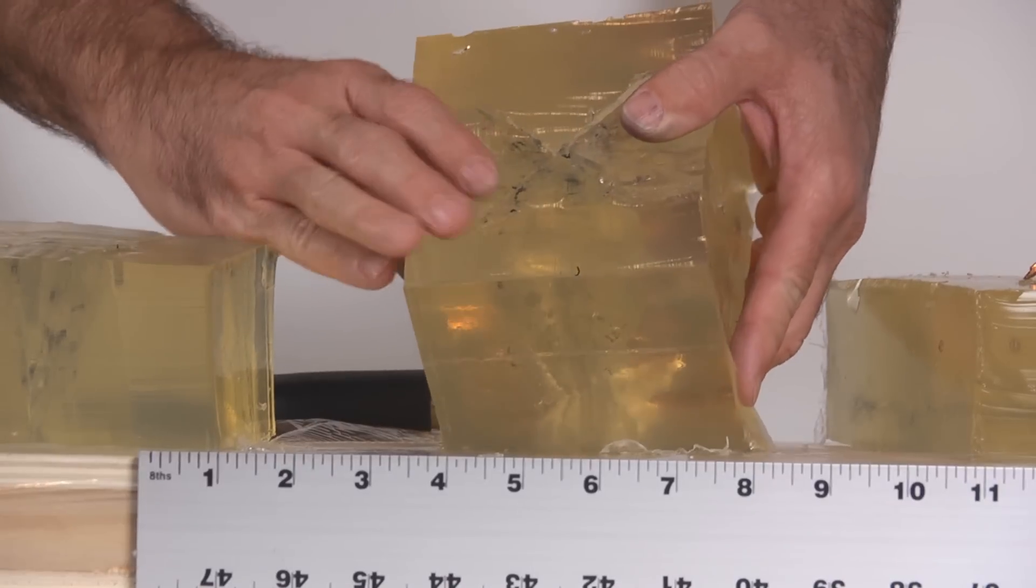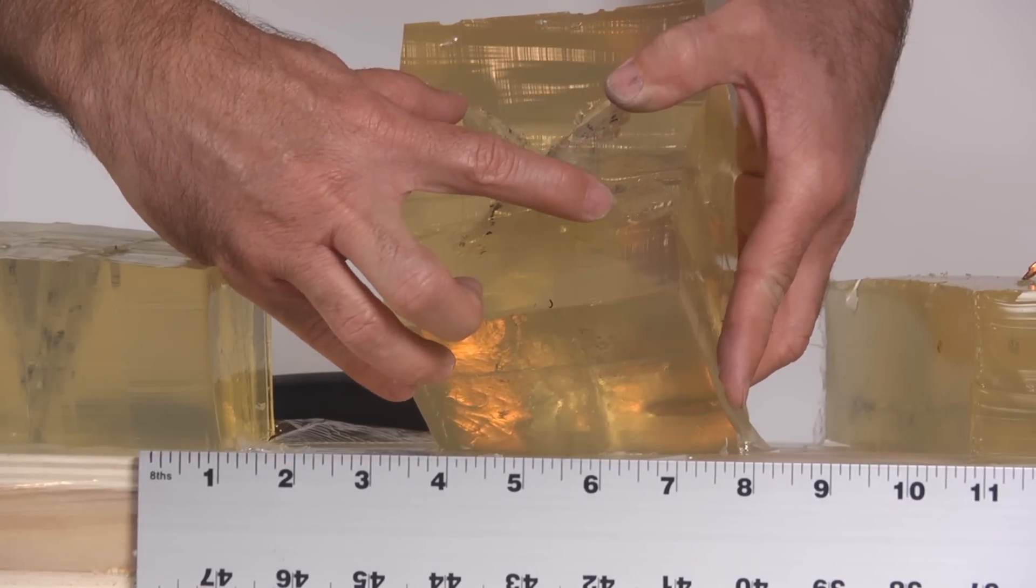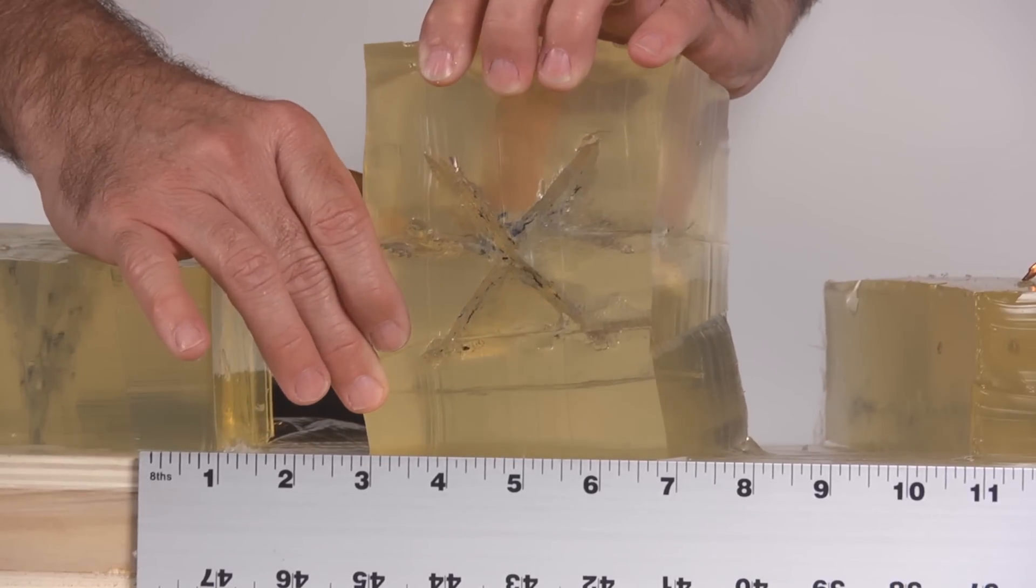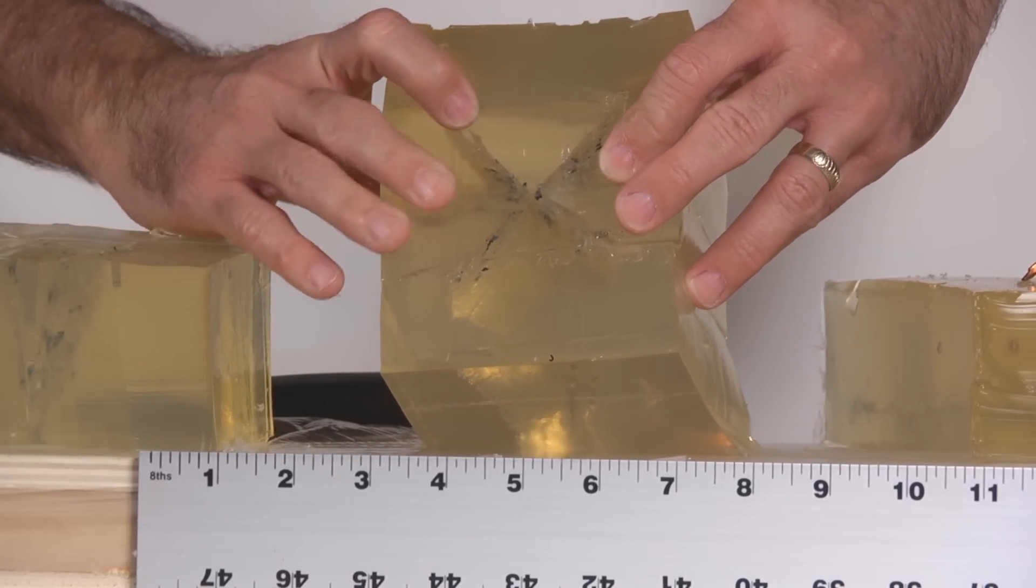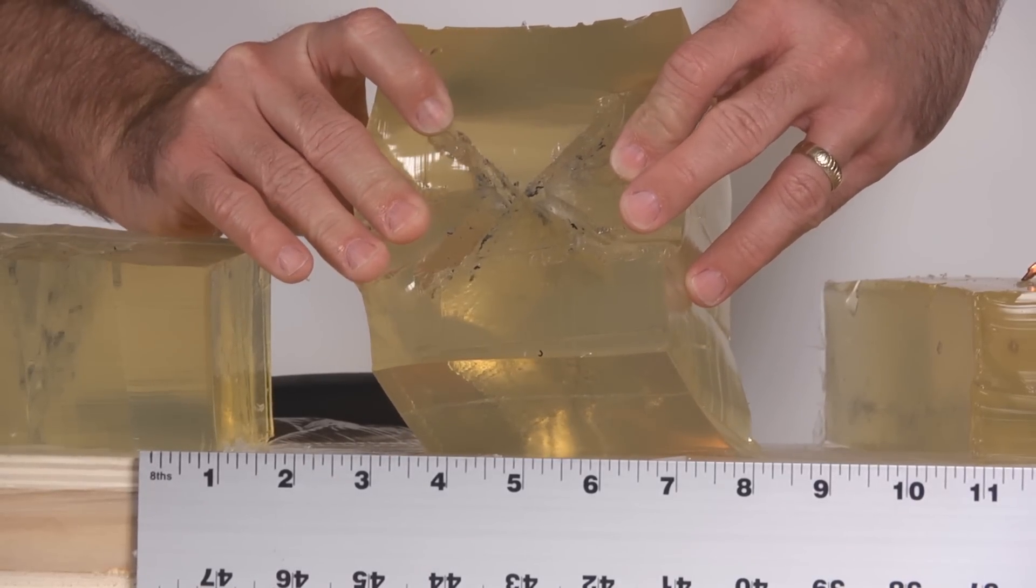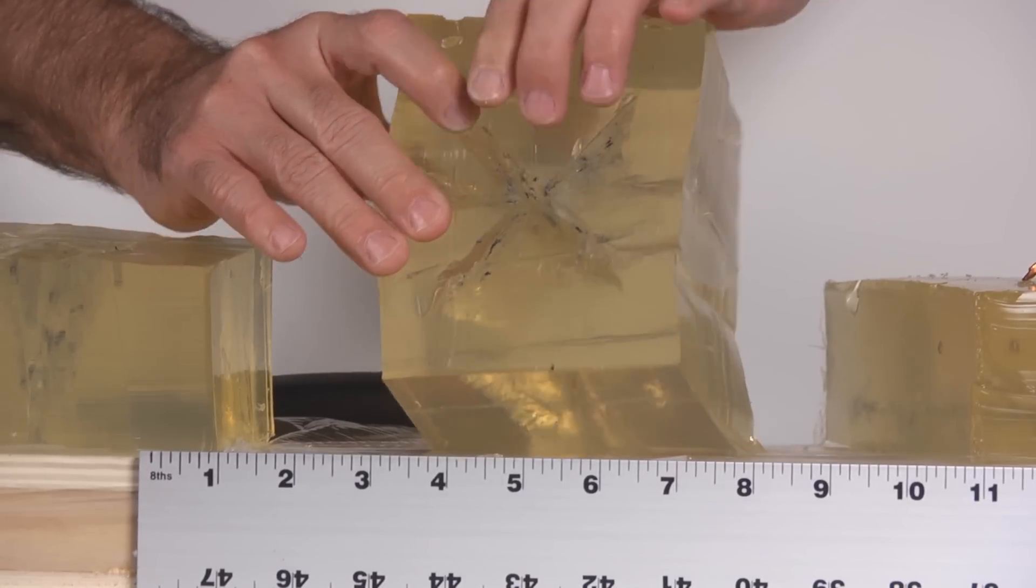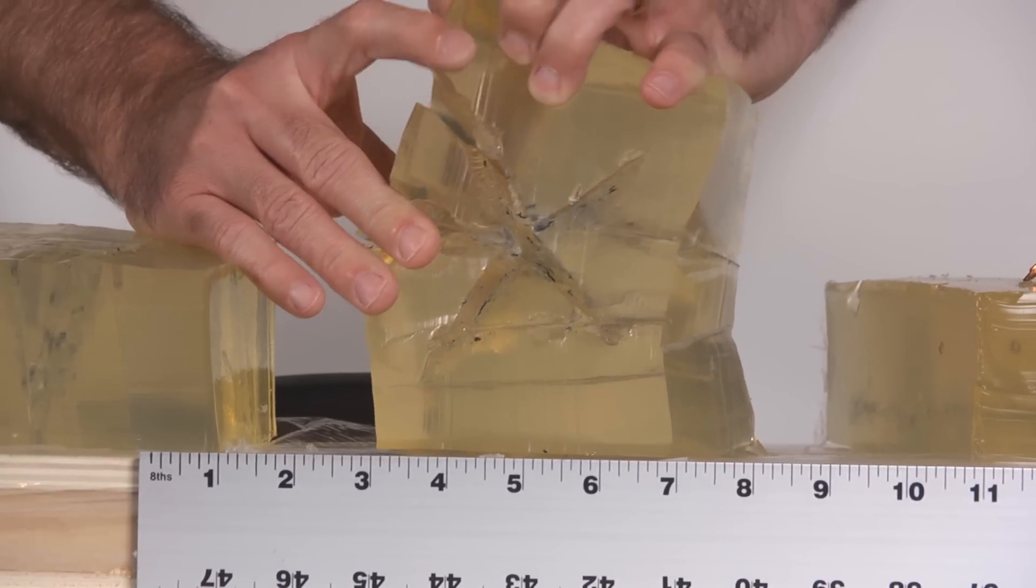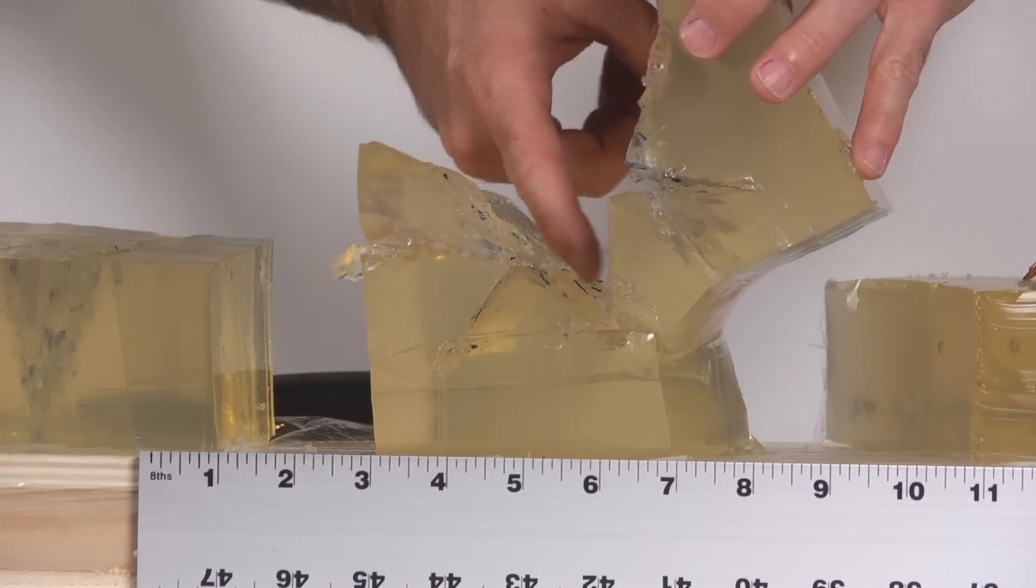This is the permanent damage that bullet did. It's reaching from here all the way to here. Just look at that gaping, horrible wound. Each pedal in there is over an inch, an inch and a half long, and it goes all the way through the gel. Here you can see it opens up—that's where that permanent track is.